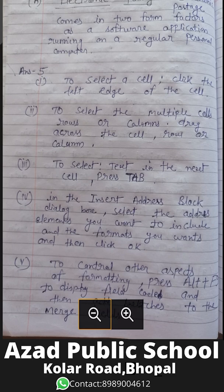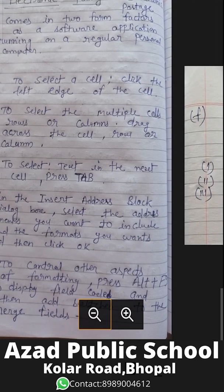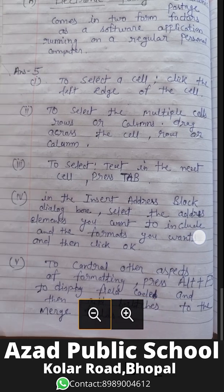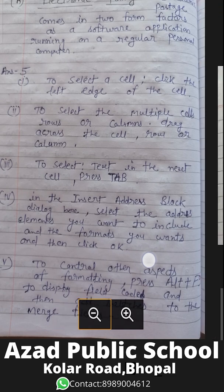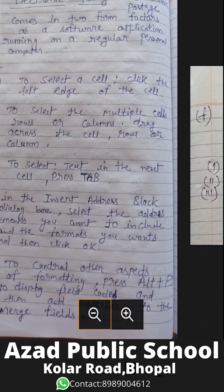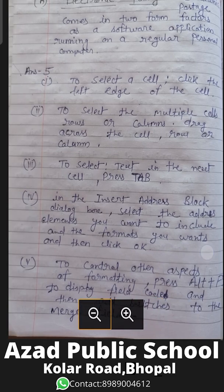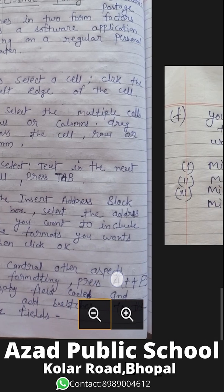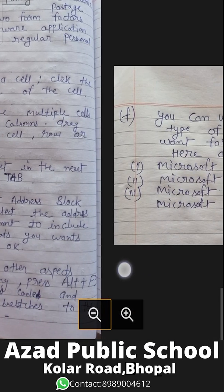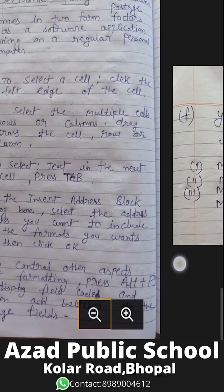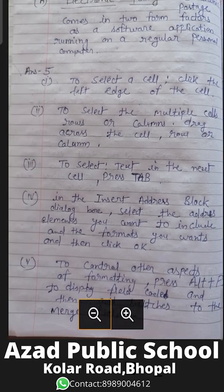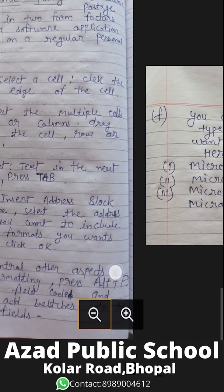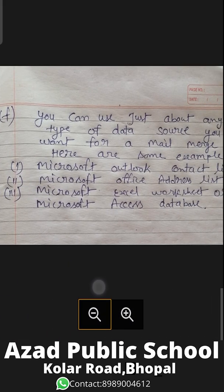In the Insert Address Block dialog box, select the address elements you want to include and the formats you want, then click OK. To control other aspects of formatting, press ALT + F to display field codes, then add switches to merge fields.